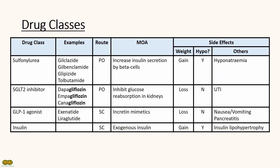Sulfonylureas, such as gliclazide, increase insulin secretion by beta cells. They cause weight gain and can cause hypoglycemia. Other side effects include hyponatremia.